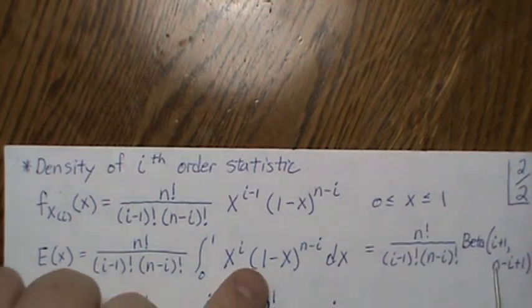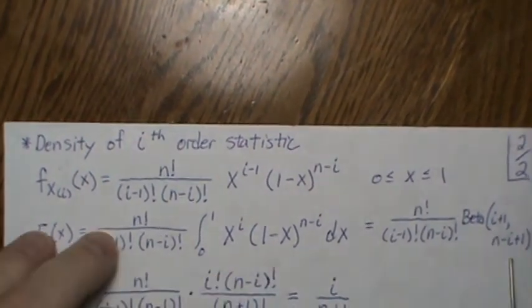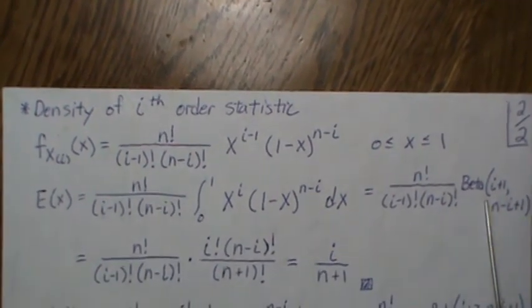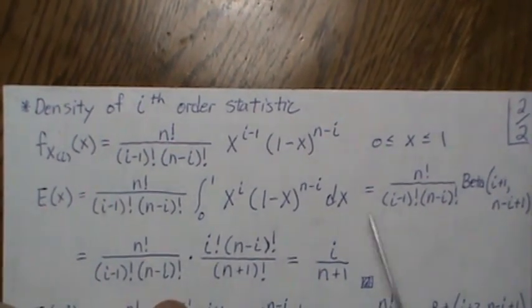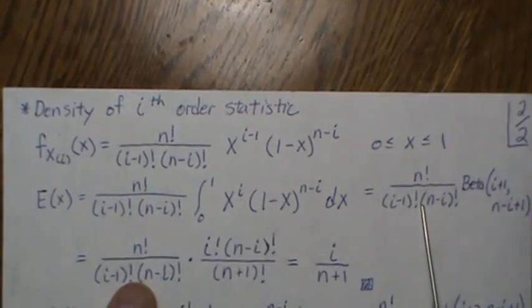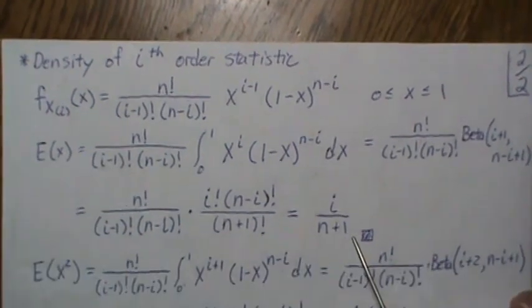So the constant out front, and then this is a beta distribution. So that is i plus one, n minus i plus one. And then since i is an integer, that can be written in factorial form. Of course this piece comes down, and then those cancel to i over n plus one.